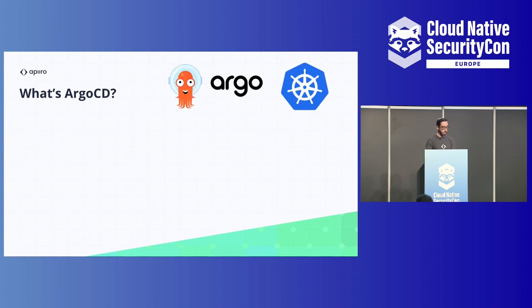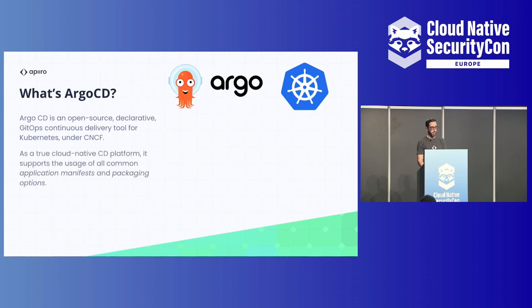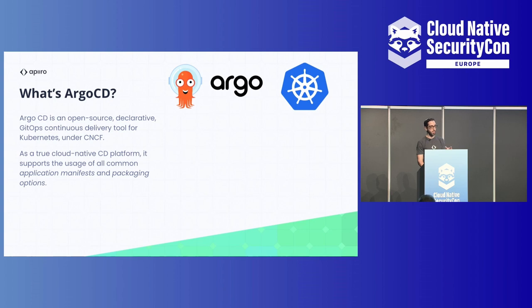So let's start with the basics — what is Argo CD? Argo CD is a CNCF project covering GitOps automation and continuous delivery, open source, which is pretty unique in this arena. Most CD systems are not open source, and Argo CD is maybe the most prominent example. It's truly cloud-native, built for Kubernetes, and uses common open source projects like Jsonnet, Ksonnet, and Helm charts, making adoption very efficient.